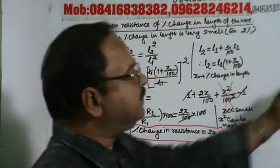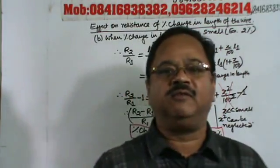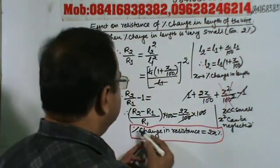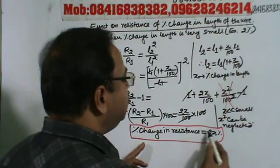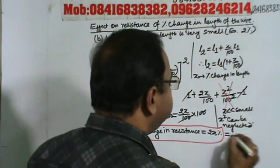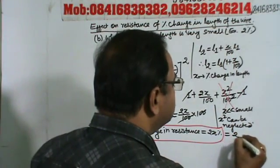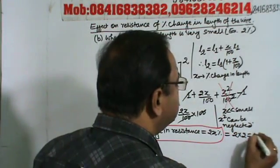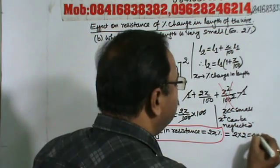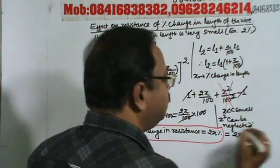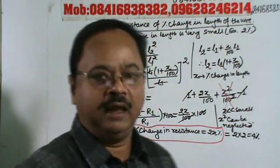Let's see what we have written. 2% is very less, so what do we do? The percentage change in resistance will be equal to 2x%. So, this is 2 into 2, which is equal to 4%. So, 4% will be the answer.